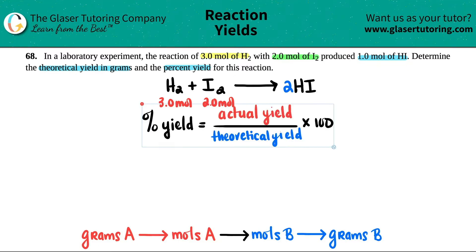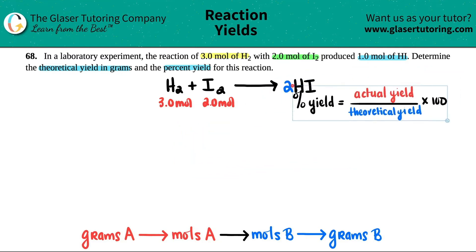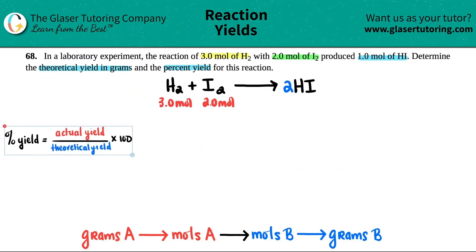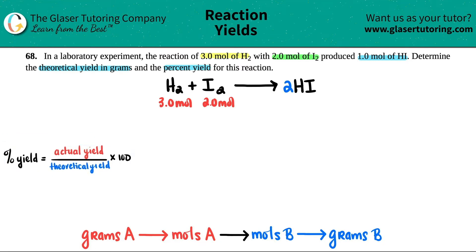The percent yield formula is basically just a percent formula of part over whole. Actual yield is what you actually produced in the actual reaction. Theoretical yield is what you could max obtain if there was no error, no nothing. It's like a hundred percent yield if there was no error at all. And this theoretical yield is always the one that's usually found with stoichiometry. They told you that you produced 1 mole of HI in the actual experiment, in the actual reaction.